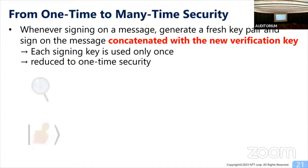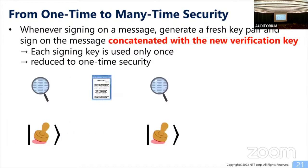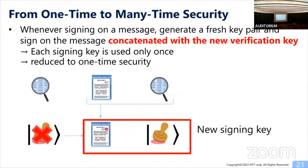Concretely: you have a verification key and signing key pair. To sign a message, generate a fresh new key pair, and use the old signing key to sign the concatenation of the message and the new verification key. The new verification key is then part of the signature, allowing the new signing key to be used for further signing. In this way, each signing key is used only once, and this is how we reduce many-time security to one-time security. This completes the DSR key construction.